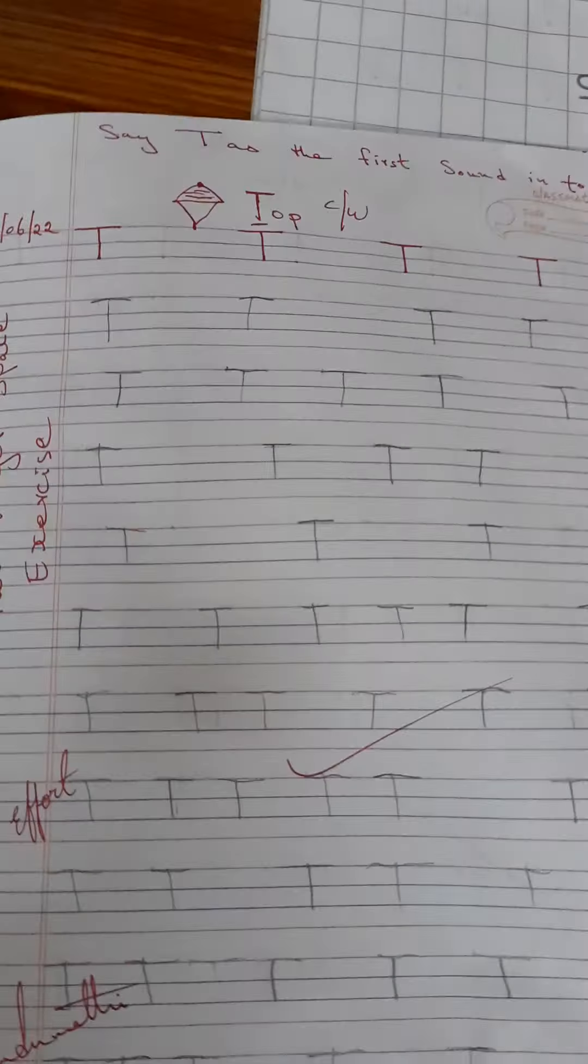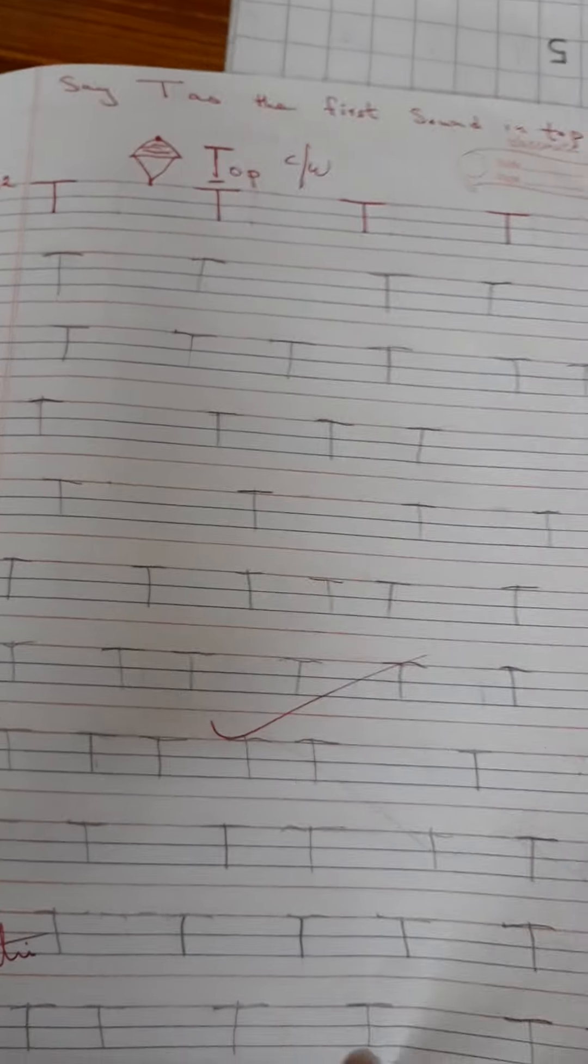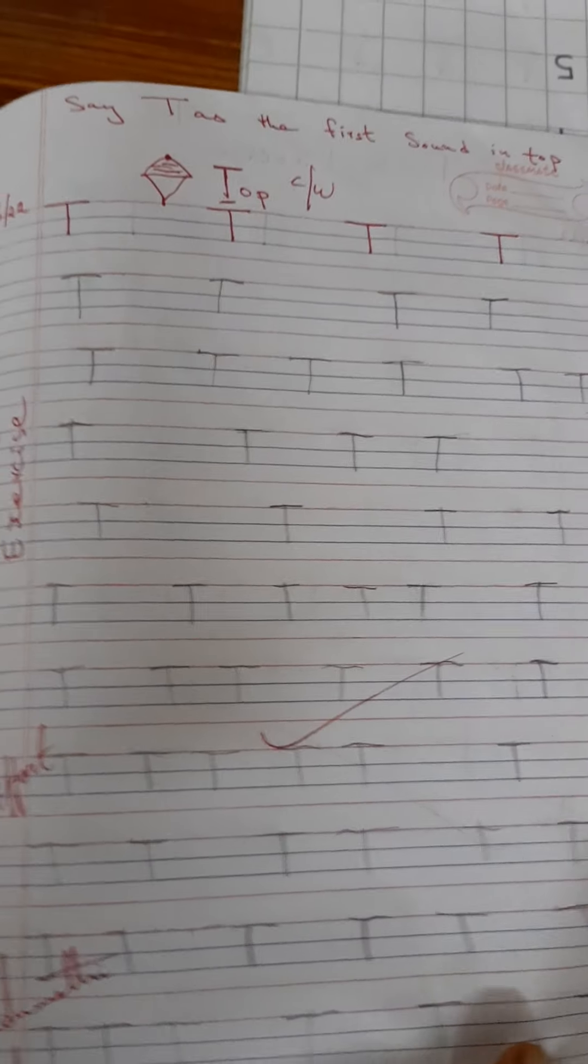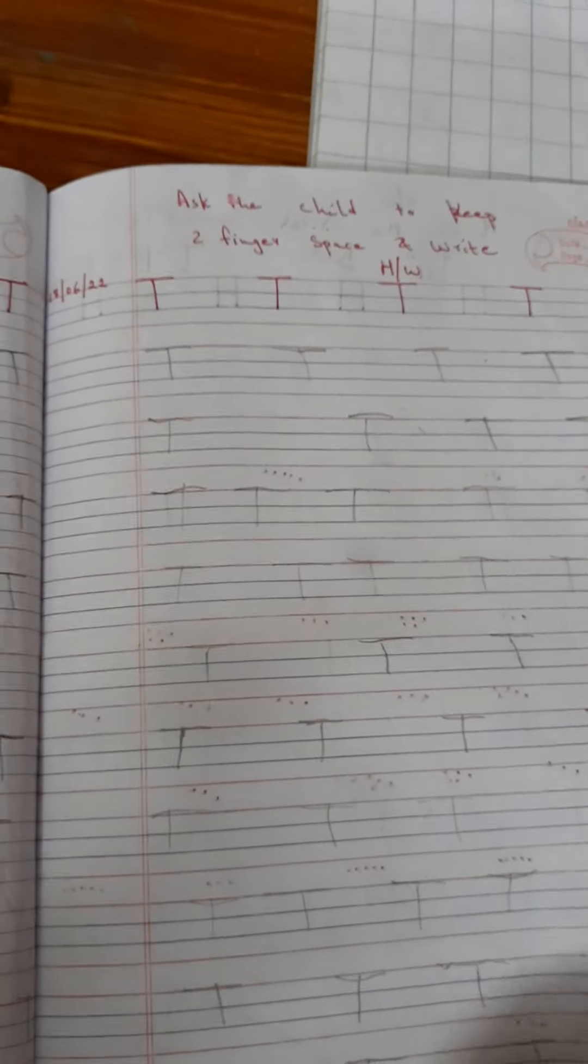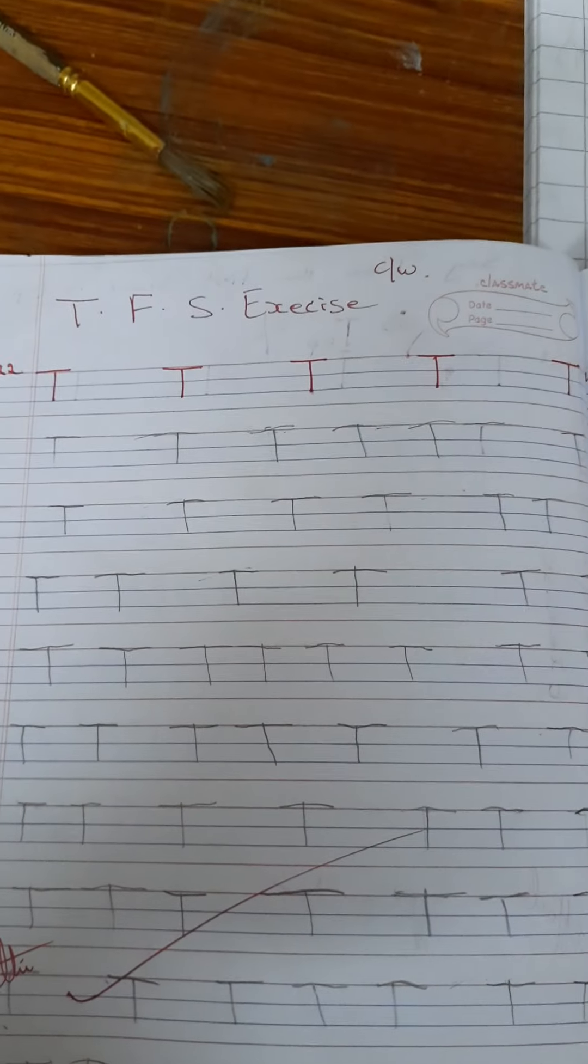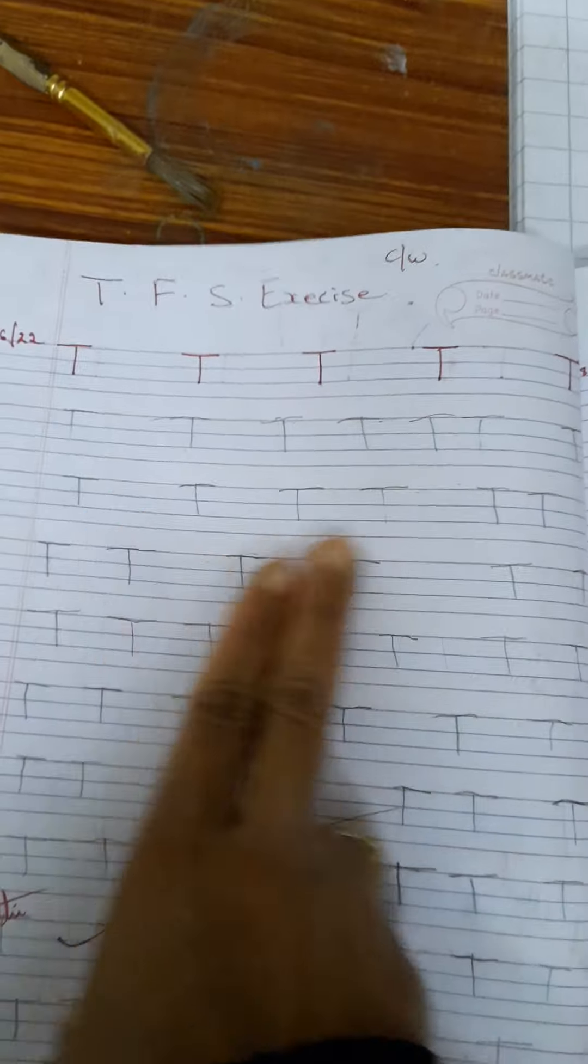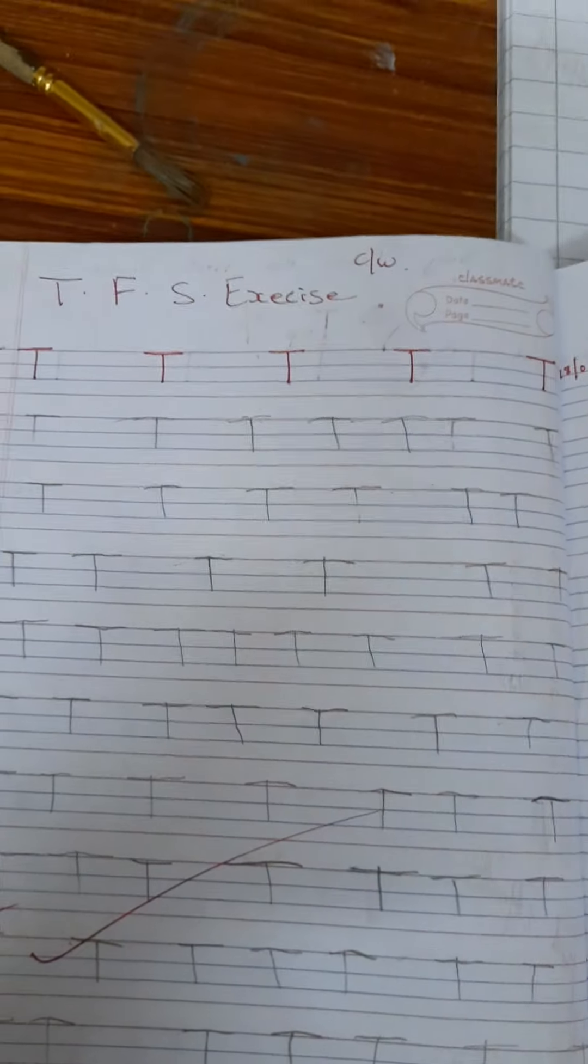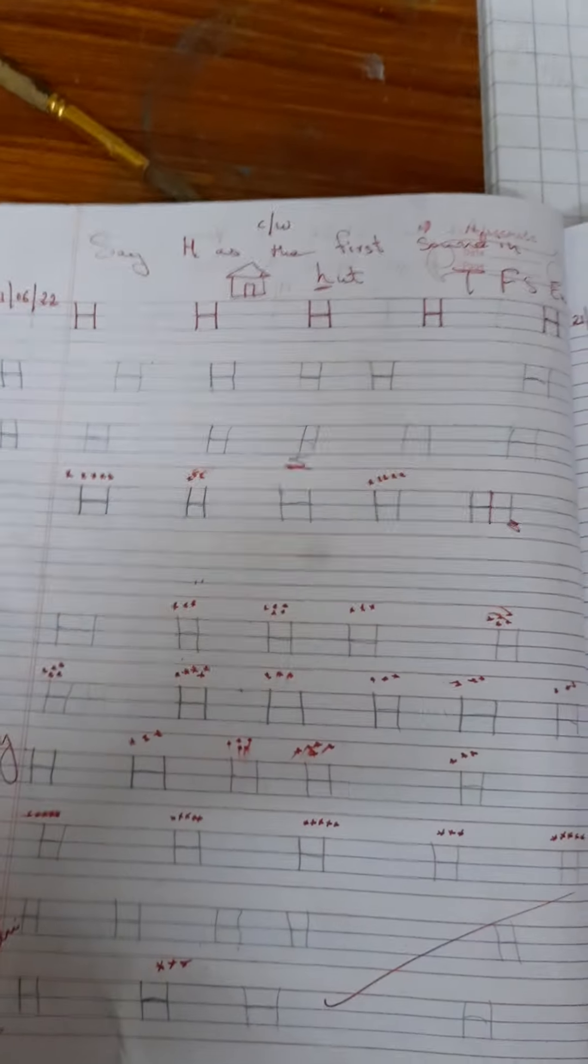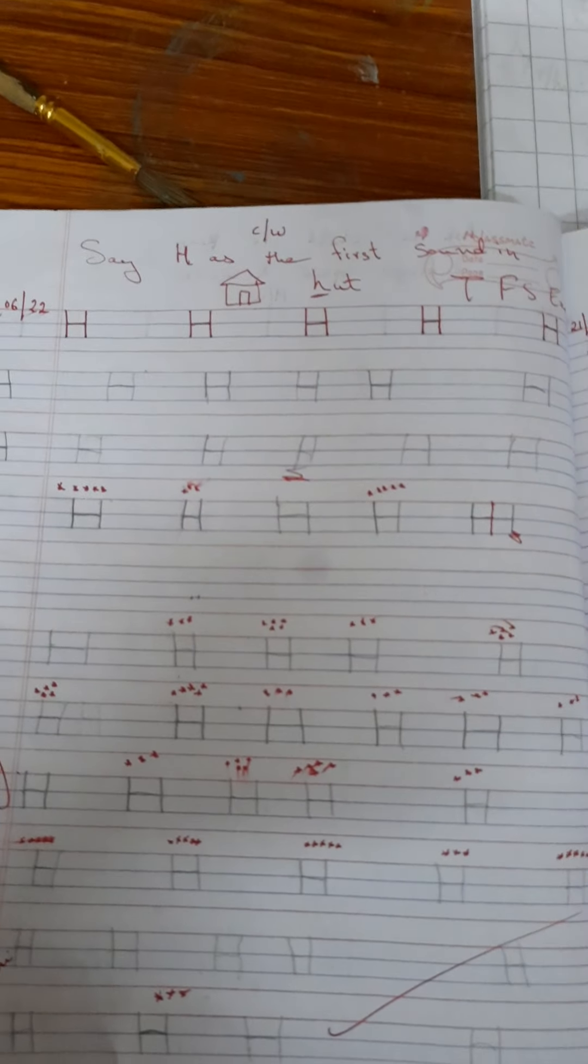T, then here T. Here the child is using two-finger space also. So this is how the child has progressed to write in a four-line notebook.